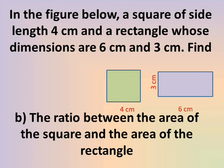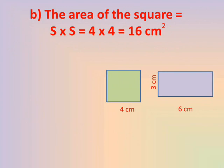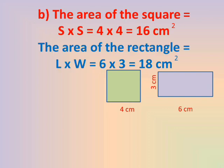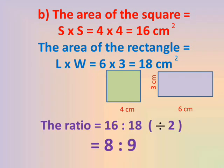Number B: The ratio between the area of the square and the area of the rectangle. We need to find the area of the square, then the area of the rectangle. The area of the square equals side × side. The side is 4, so 4 × 4 = 16 cm². The unit of area is to the power 2, so cm². The area of the rectangle equals length × width = 6 × 3 = 18 cm².